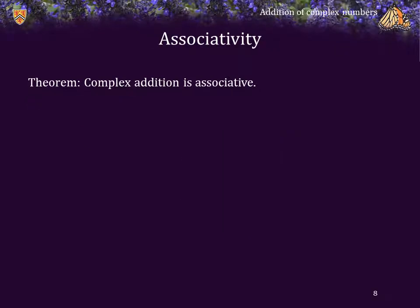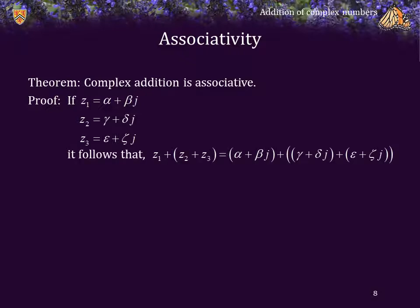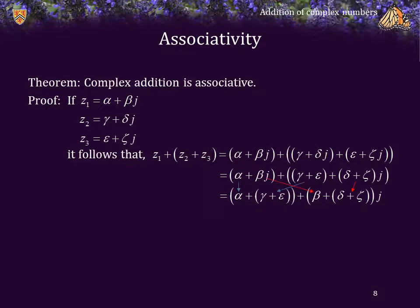Theorem: Complex addition is also associative. Proof. If z1, z2, and z3 are alpha plus beta j, gamma plus delta j, and epsilon plus zeta j, then the sum, z1 plus the sum of z2 and z3, can be shown here. So first we add the second and third complex numbers to get gamma plus epsilon plus the sum delta plus zeta times j. And now we take the real component of the first complex number and the real component of the second, add them. Take the imaginary components, add them.